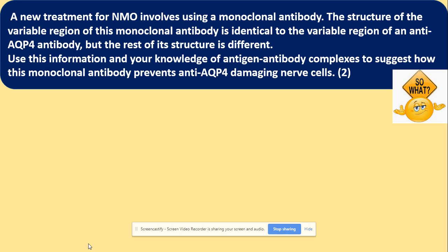A new treatment for NMO involves using a monoclonal antibody. The structure of the variable region of this monoclonal antibody is identical to the variable region of the anti-AQP4 antibody, but the rest of its structure is different. Use this information and your knowledge of antigen-antibody complexes to suggest how this monoclonal antibody prevents anti-AQP4 from damaging nerve cells.